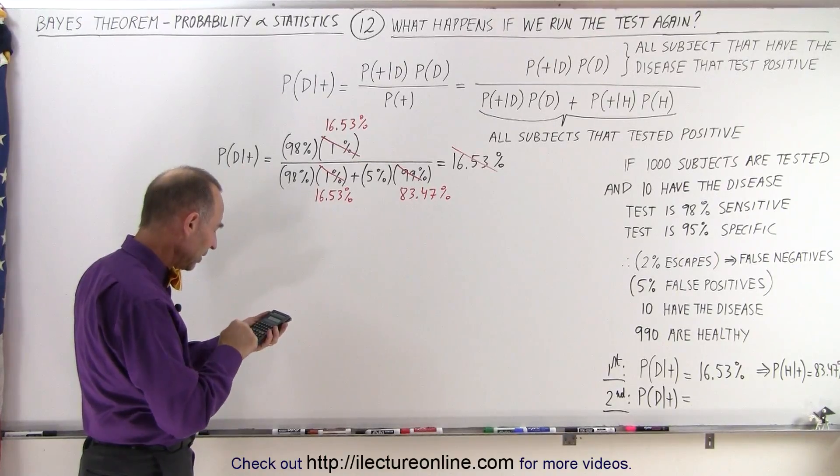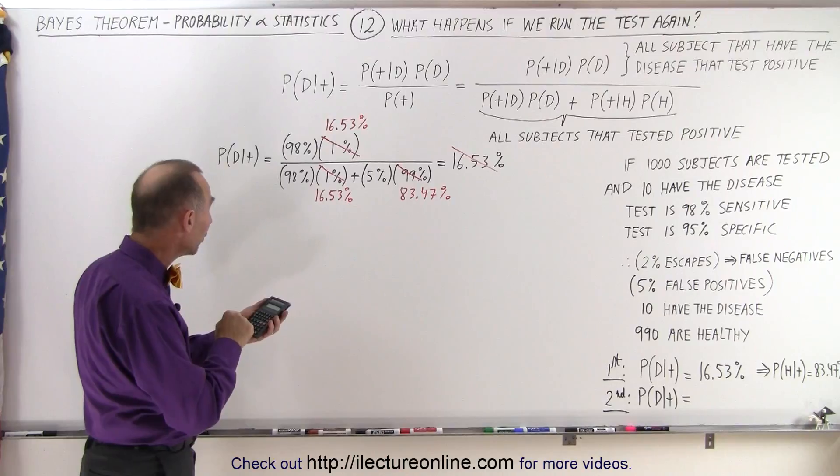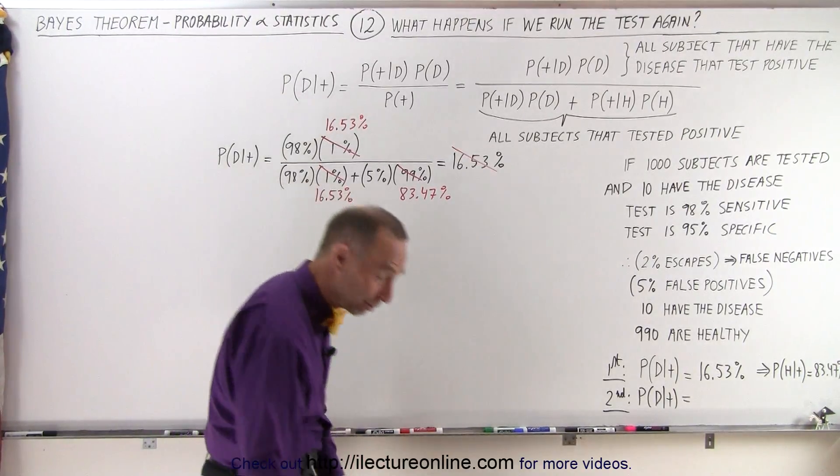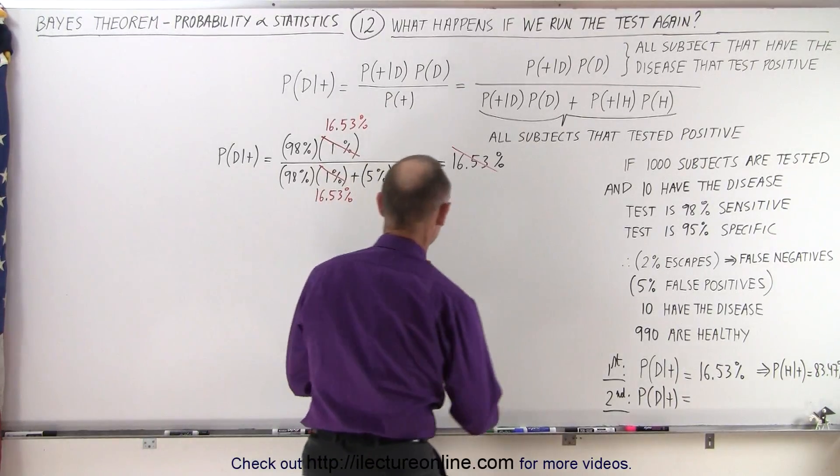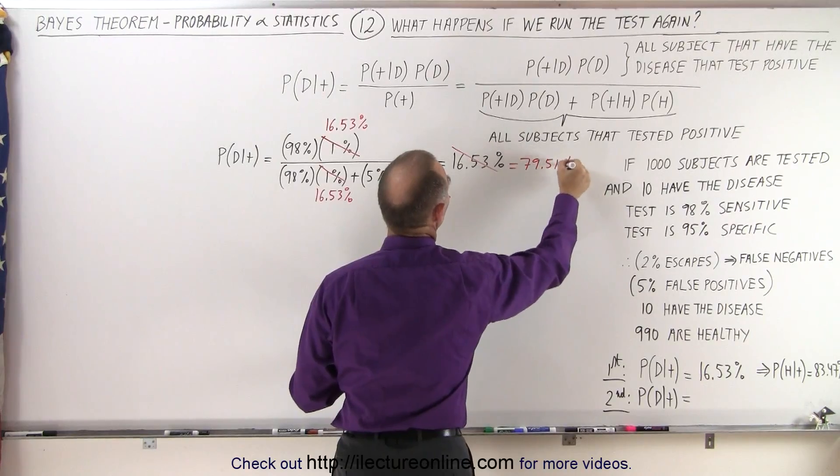Bring that to the numerator and multiply that times 0.98 times 0.1653 and we get 79.51%. So you can see there's a significant increase. So this is now equal to 79.51%.